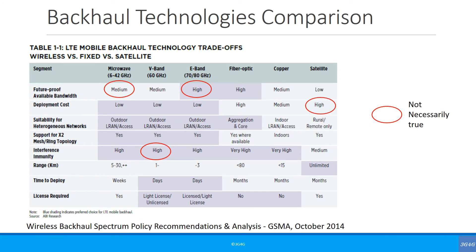The chart says satellite deployment costs are high. These costs are going down significantly with the launch of high-throughput satellites, or HTS. Also, because there is a lot of bandwidth available, the cost per bit of satellite backhaul has also decreased — but it has to decrease even further to be used more widely.